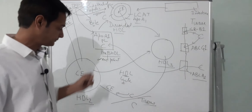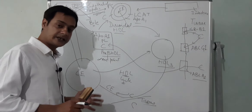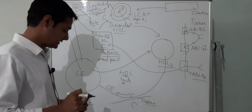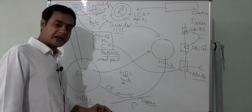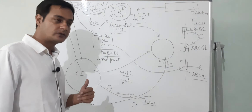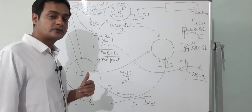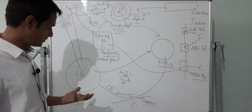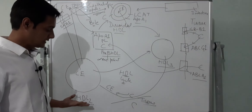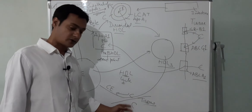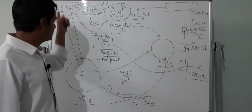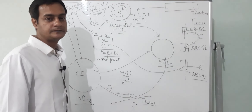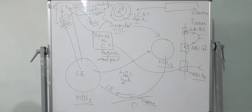Regarding clinical significance, the concentration of HDL in plasma is inversely proportional to atherosclerosis. This makes sense because if you have more HDL in plasma, more and more cholesterol will be converted to cholesterol ester and transported to the liver.